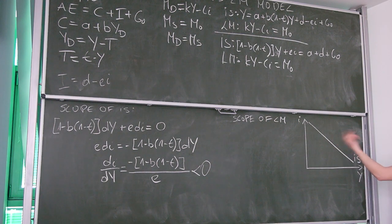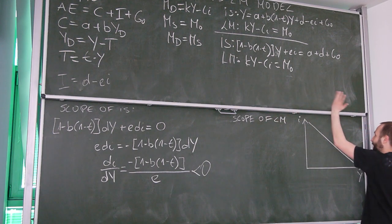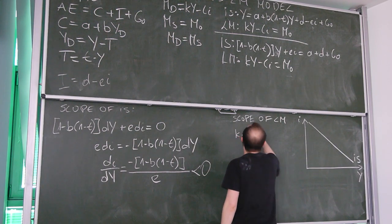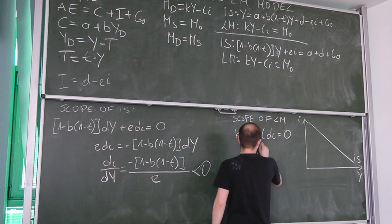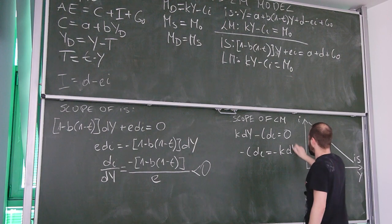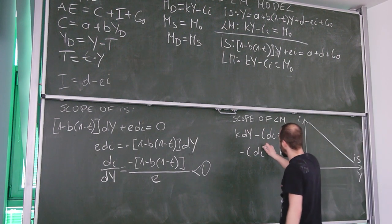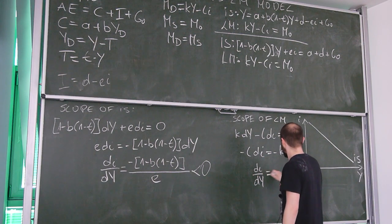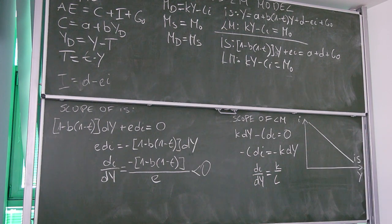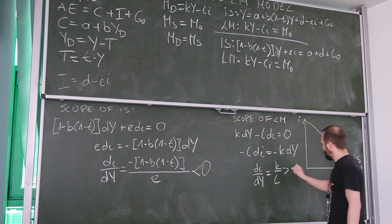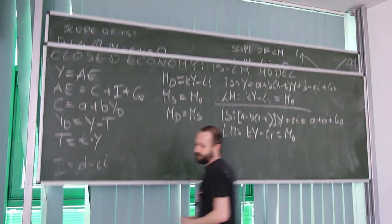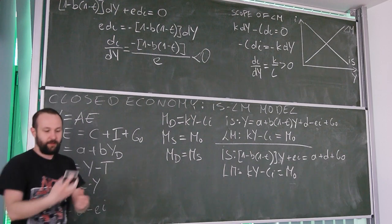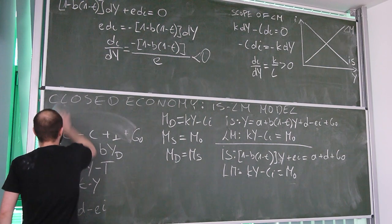Differentiating the LM equation with respect to y and i gives: k·dy minus l·di equals zero. Moving the term to the other side and dividing both sides by negative L and dy, we get di/dy equals k over L. Since both k and L are assumed to be positive, the slope of LM must be positive and is a constant. Therefore, LM is an upward-sloping linear function.